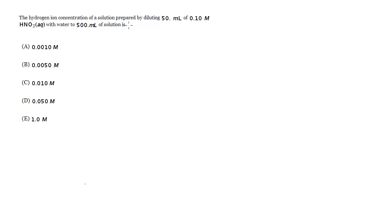The hydrogen ion concentration of a solution prepared by diluting 50 mL of 0.10 molar nitric acid with water to 500 mL of solution is. Now two ways to do it, one the long way, one the easy way.